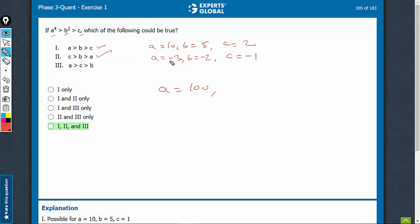When the two values are a bit nearby. Let's say a = 100, c = 10, and b = 9. c > b, but b^2 becomes greater than c. So for such values, you'll see that this condition, as well as this condition, is met. So all three are possible. The right answer is option...